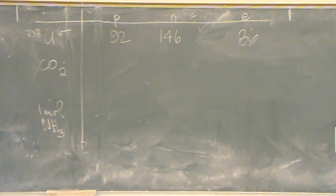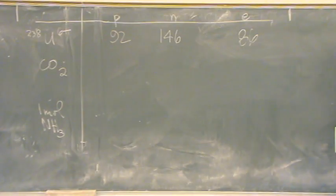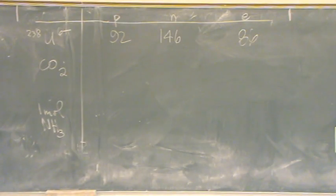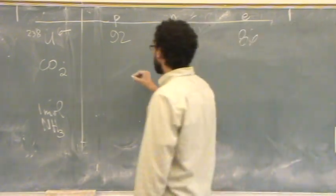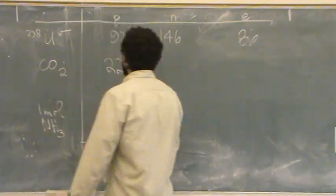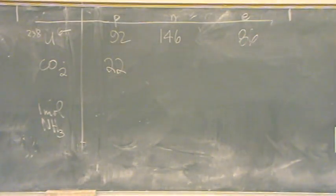Now let's do the more difficult one — CO₂, one molecule of CO₂. Let's start with protons. How many protons per carbon? 6, from the periodic table. How about oxygen? 8 for each, and doubling that gives 16. So 16 plus 6 for carbon, that's 22 protons. How many electrons in one molecule of CO₂? 22, because it's neutral.